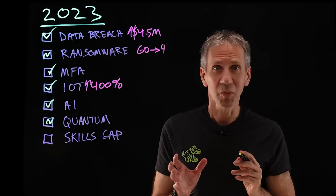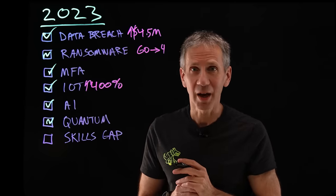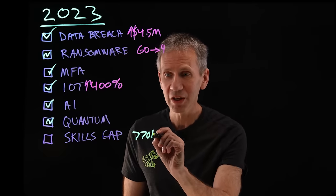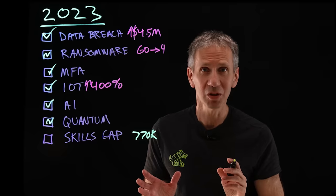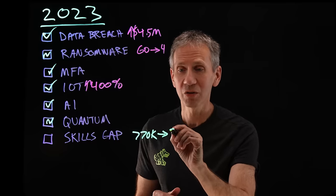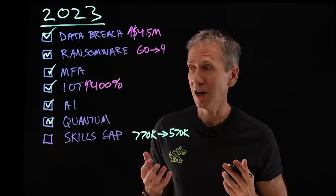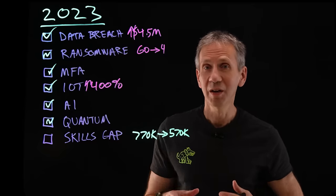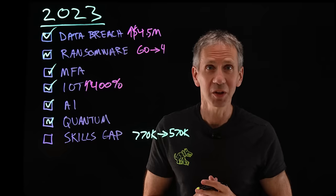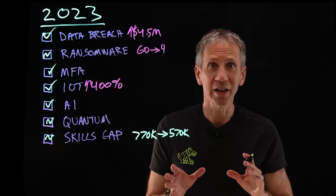One bit of good news I can report, though, that I was partly right and partly wrong on, and that is the skills gap. So the skills gap actually moved from what was 770,000 open positions in the cybersecurity space to now, according to CyberSeek.org, we're down to about 570,000. So that's an improvement. I predicted that we would still have a skills gap, and we do, but it actually has gone down a little bit. And I hope that continues to be the case, because we need a lot of good guys in here who are going to be able to fight the good fight.